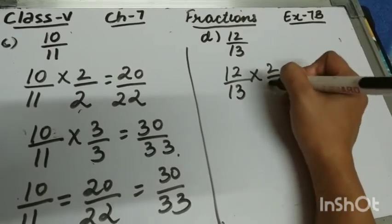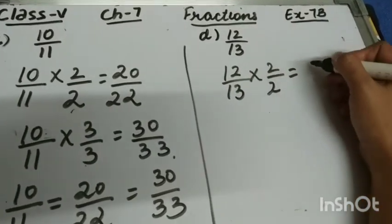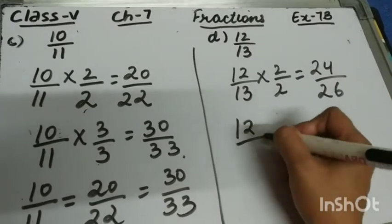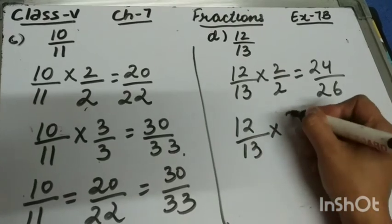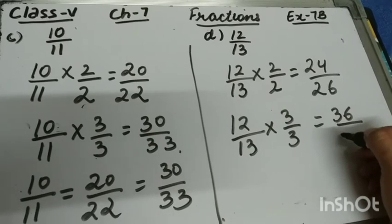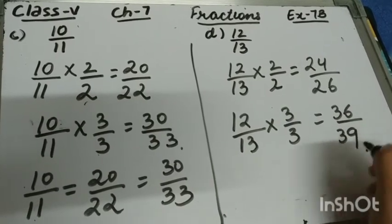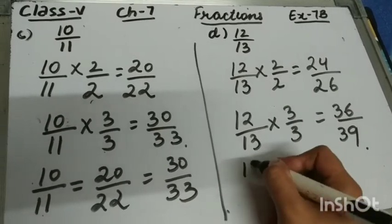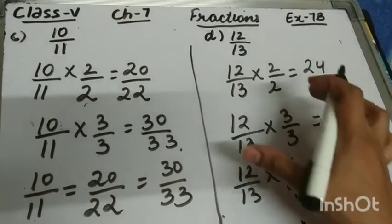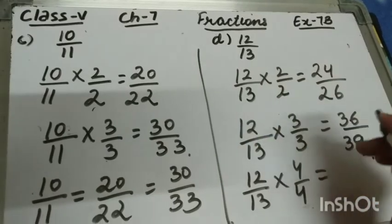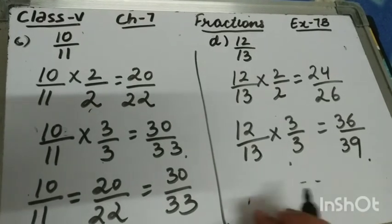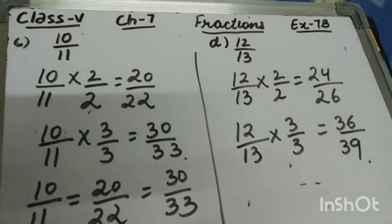Next is 12 upon 13. First, I am going to multiply the numerator and denominator by 2 — 12 twos are 24 and 13 twos are 26. Next, multiplying by 3 — 12 threes are 36 and 13 threes are 39. You can take 4 or 5 as well, but here we only need two equivalent fractions, so I am taking the first two multipliers. This is question number 2 of Exercise 7B.